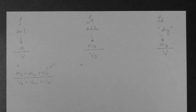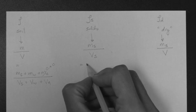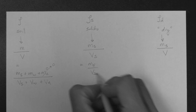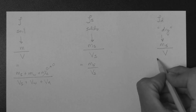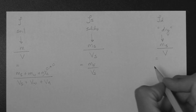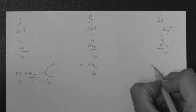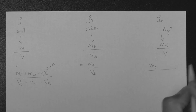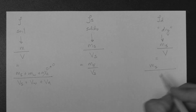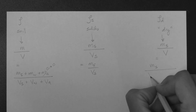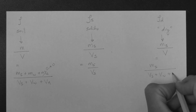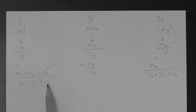Mass of solids over volume of solids cannot really be expanded — it stays as is. The dry density is the mass of solids, which cannot be expanded, divided by the total volume — the volume of soil — which equals the volume of solids plus the volume of water plus the volume of air.